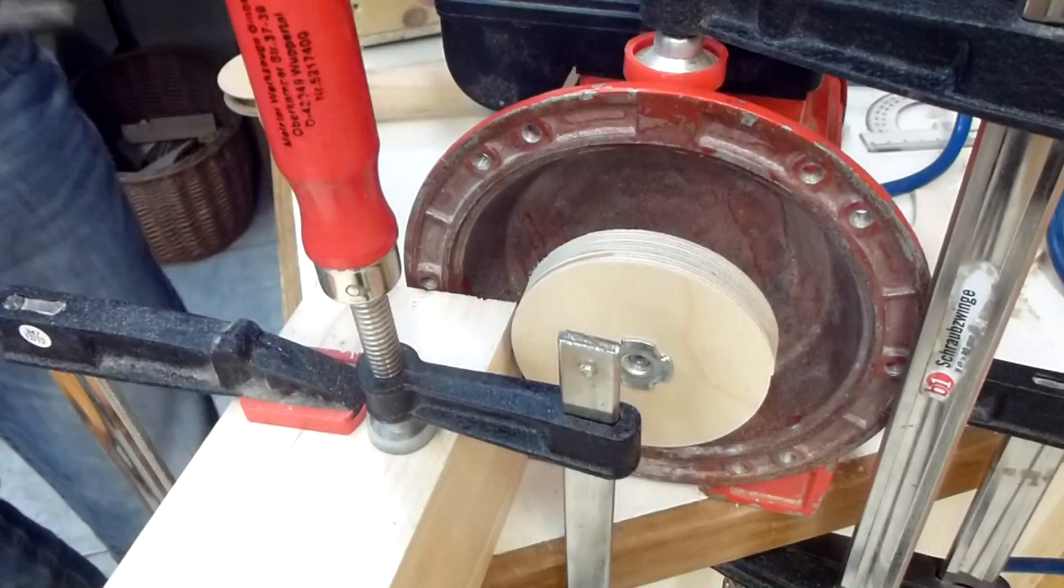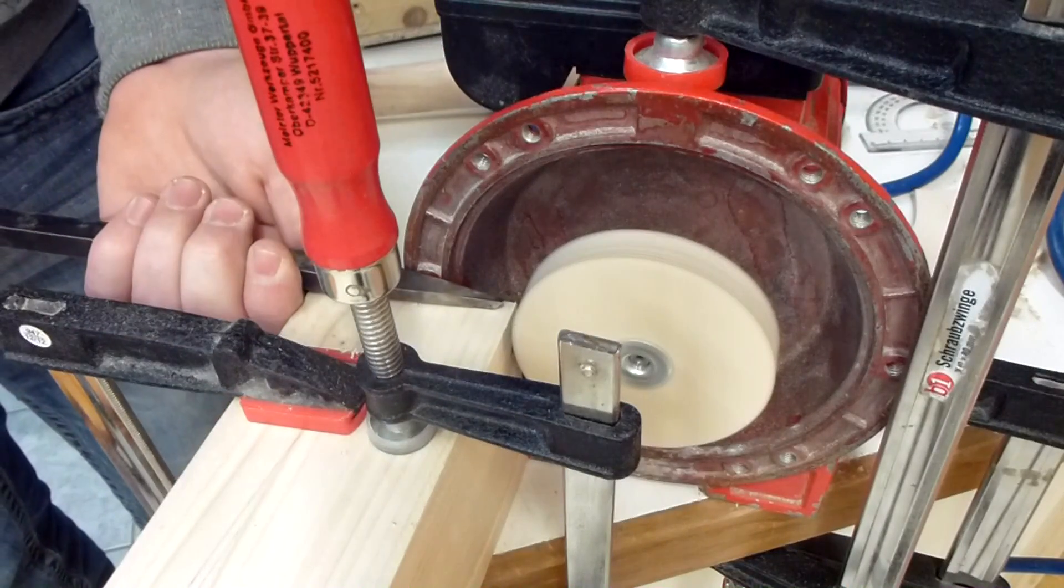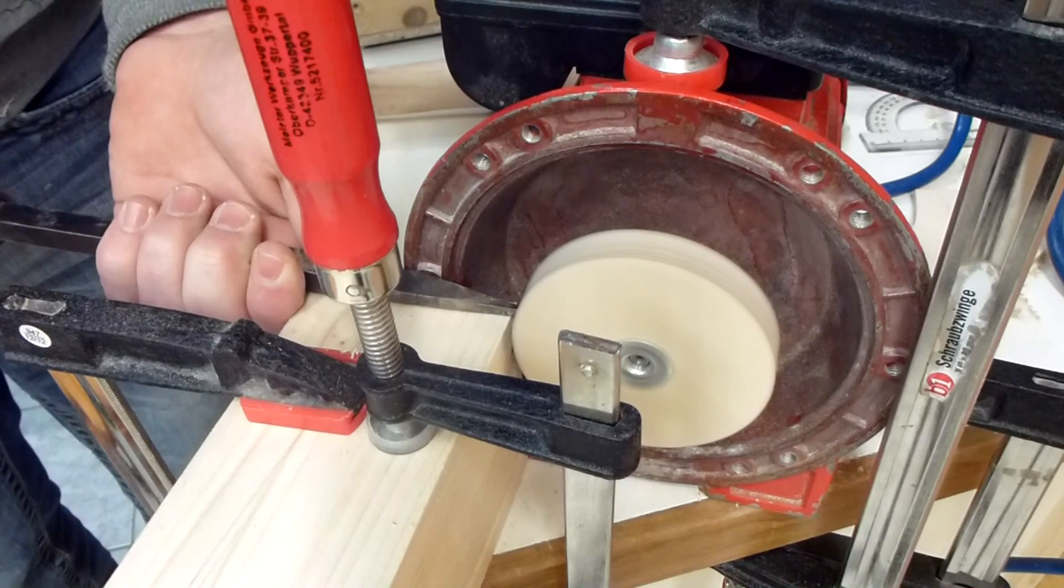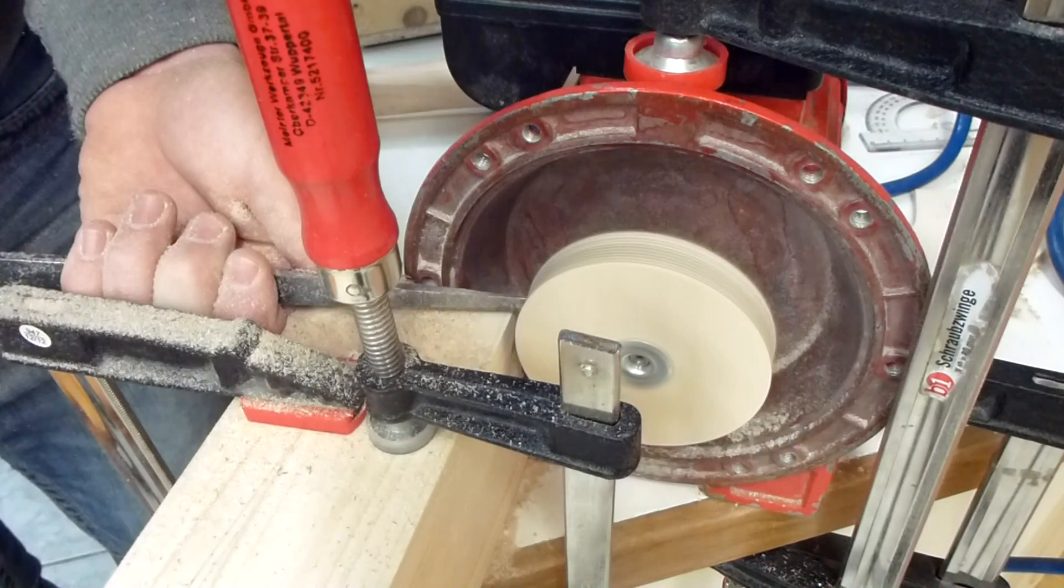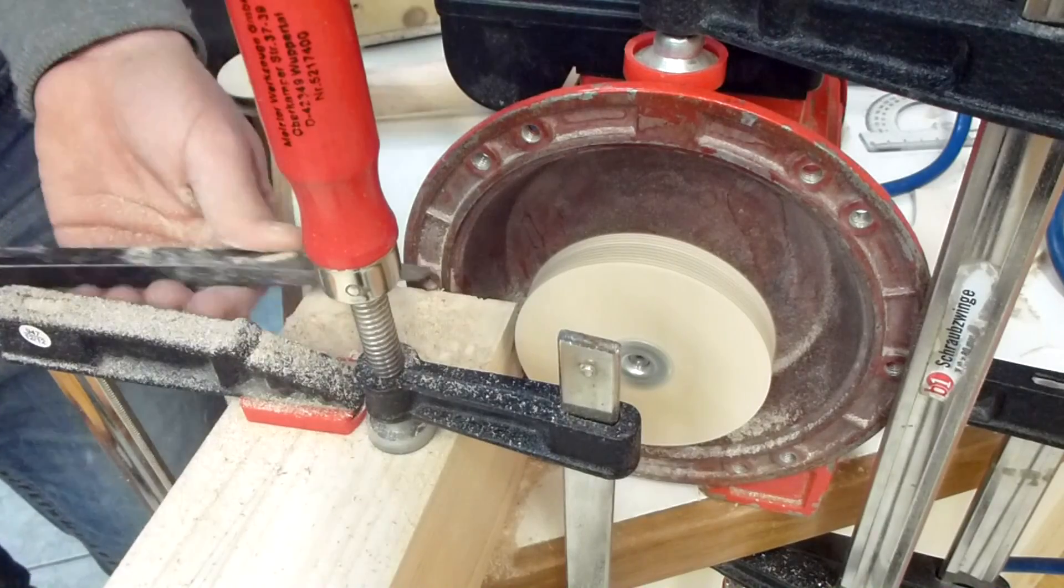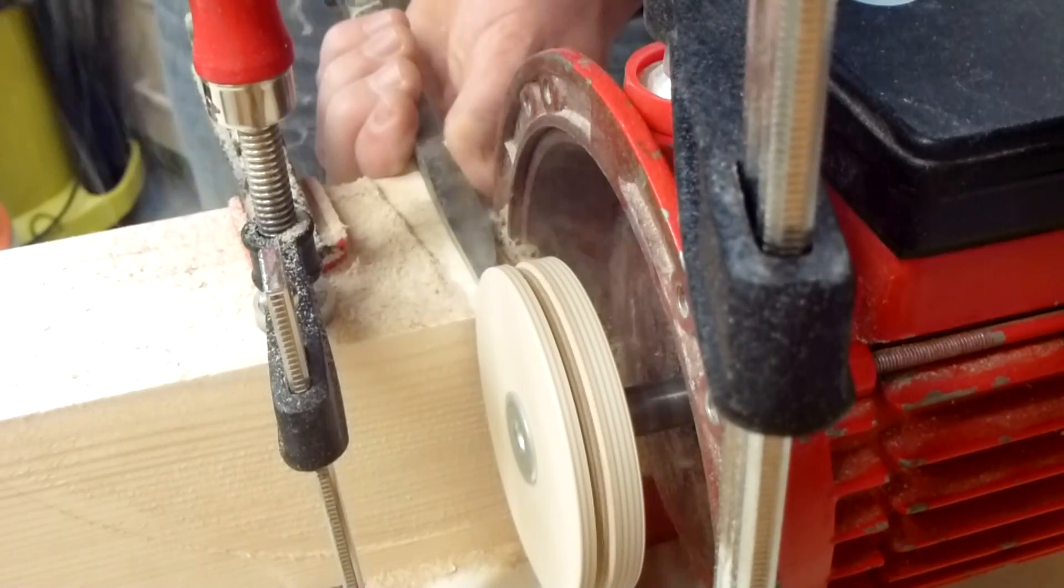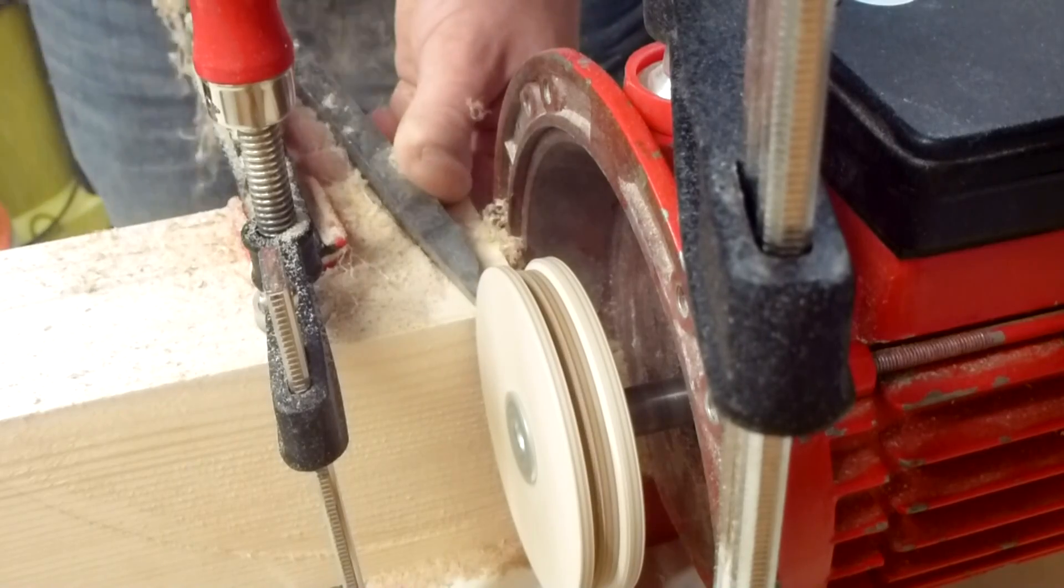I could have just made the disc pulley smaller to get the right RPM, but then I would have to mount the motor a lot higher than before. So I worked out a pulley ratio that makes the right RPM and doesn't change the position of the motor that much, but that also meant that I had to make a bigger motor pulley.